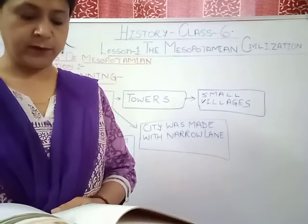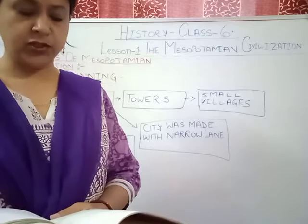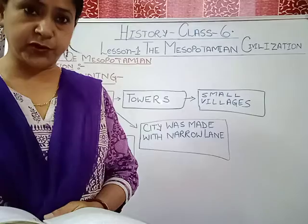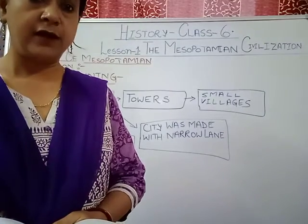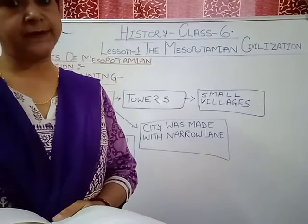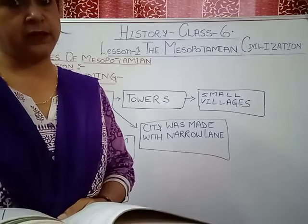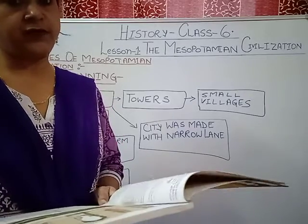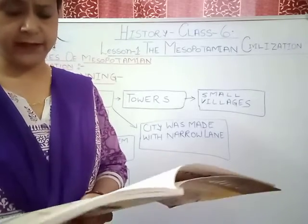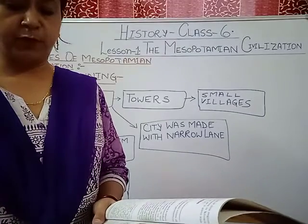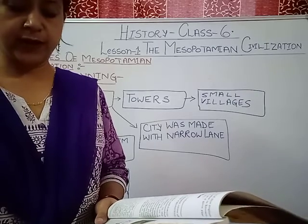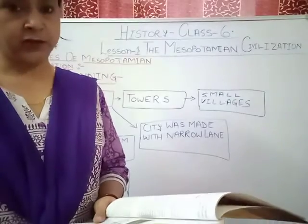The common man was not educated and was mainly engaged in agriculture. The slaves served all the other classes — they served the king, the priests, and the middle class. In the family structure, males were considered more important in society, and the father was the head of the family. His wife and children had to follow the rules laid down by him.